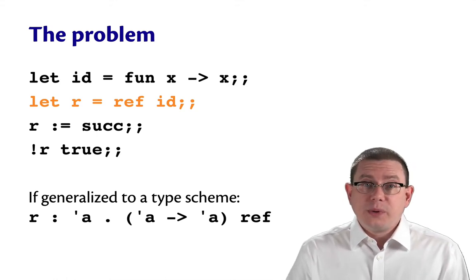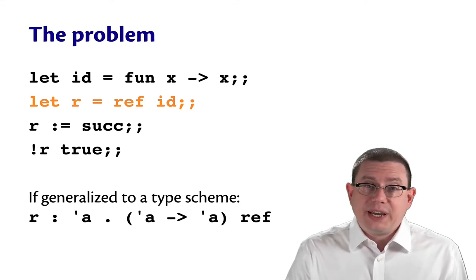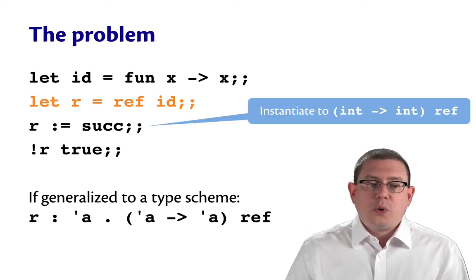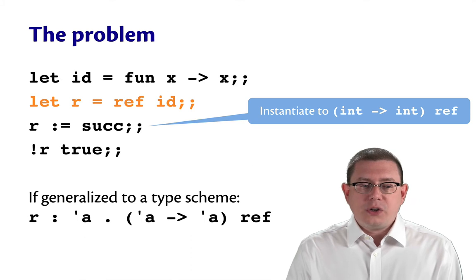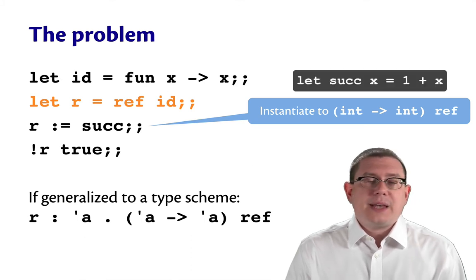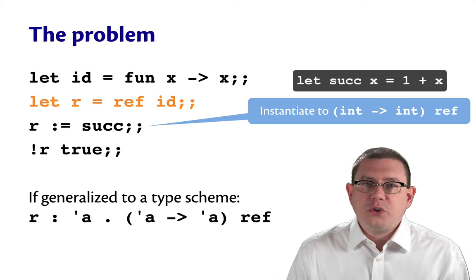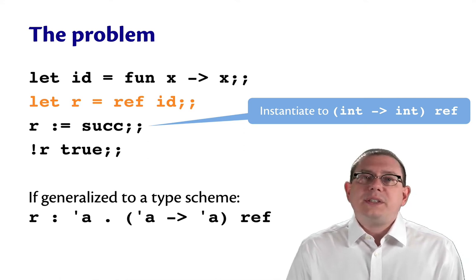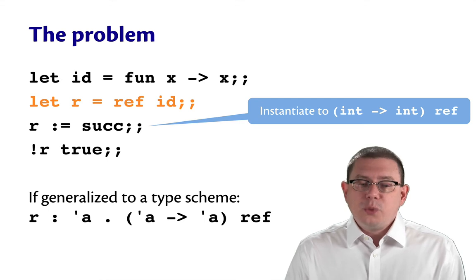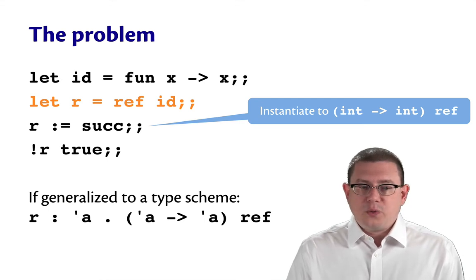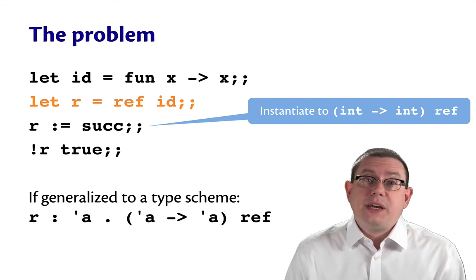Now that it's been generalized, each time it's used, it gets instantiated. So here, when we update r to be the successor function, that's actually a function built into OCaml. It's just the function that adds one to an integer. Well, then we'll instantiate the type of r from that type scheme to a type int arrow int ref because we're going to discover that it needs to be an integer function.